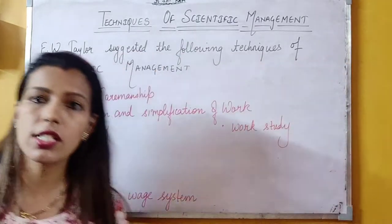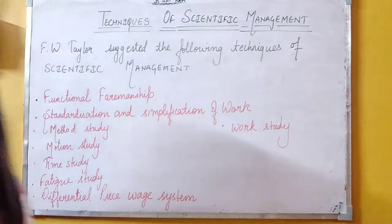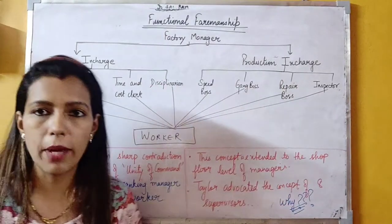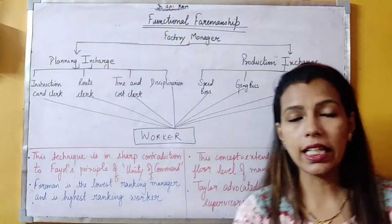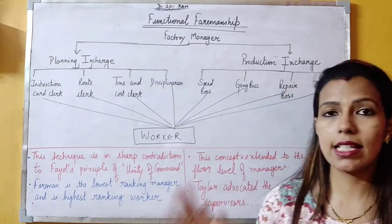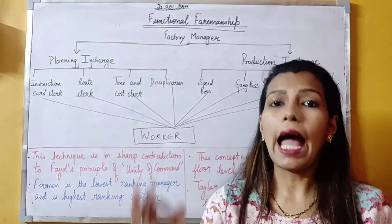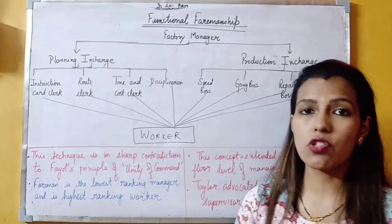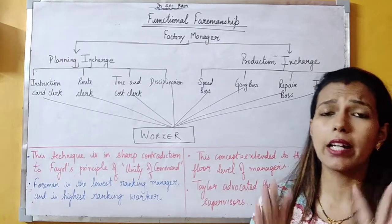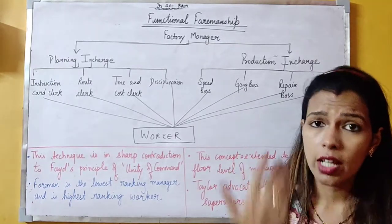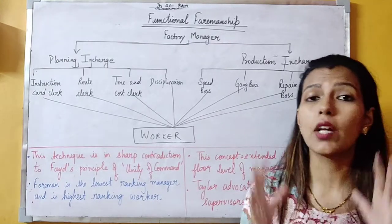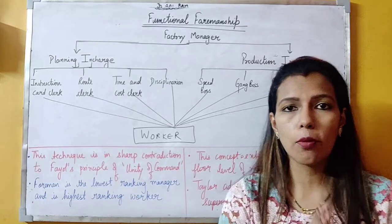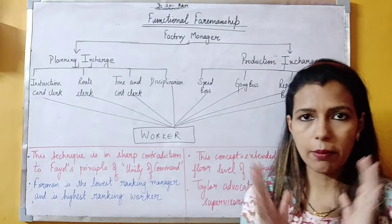Let's begin with the first technique of Scientific Management. The first technique is Functional Foremanship, which is the most important of all techniques. We have started with this technique because a lot of direct questions, indirect questions, and case study-based questions have come from Functional Foremanship. So we will understand this technique in a very easy way.